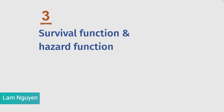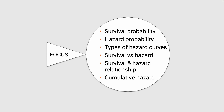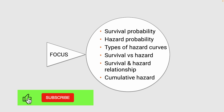This tutorial is about survival function and hazard function. We will delve into survival probability or survival function and hazard probability — also called hazard rate or hazard function. Then we will look at types of hazard curves. After this, you will find out the differences between survival probability and hazard probability as well as their relationship. In the last section, you will delve into the cumulative hazard.